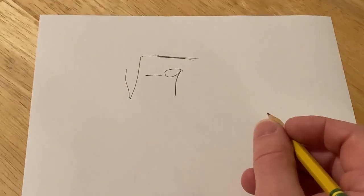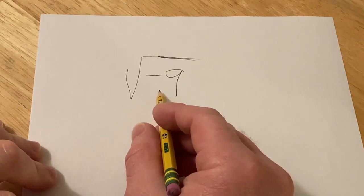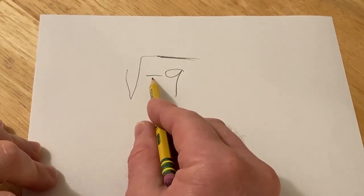Hi, in this problem we're going to simplify the square root of negative 9. To do this, we're first going to get rid of this negative.